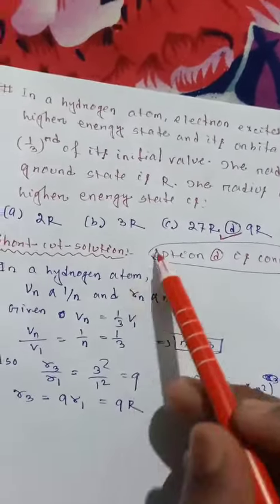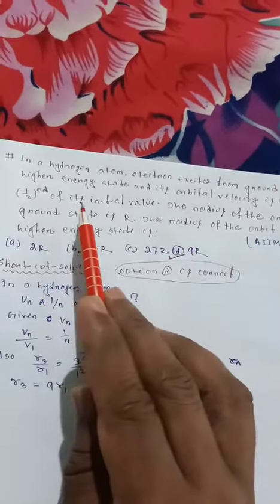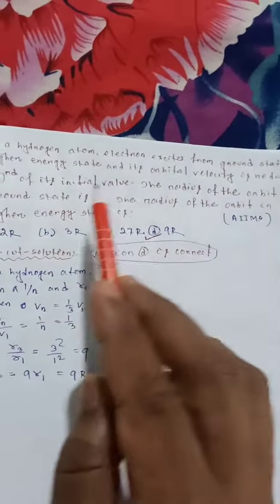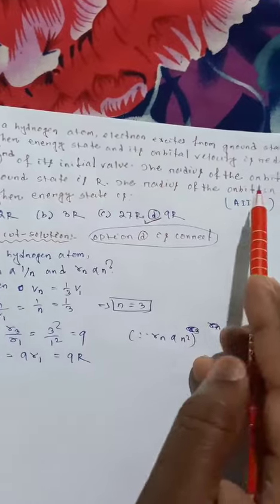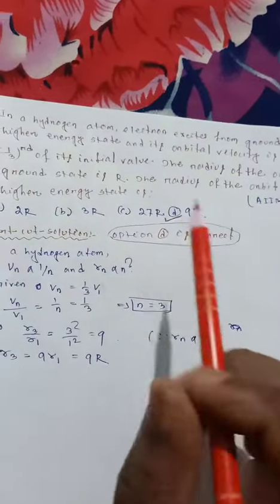So the question is, in a hydrogen atom, the electron is excited from the ground state to the higher energy state and its orbital velocity is reduced to one third of its initial value. The radius of the orbit in the ground state is R. Then the radius in the higher state is how much?